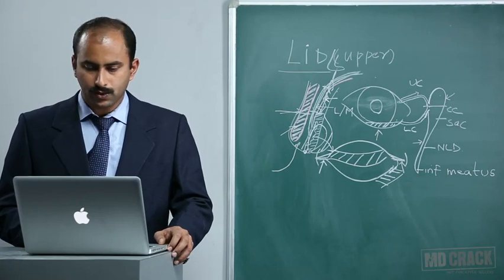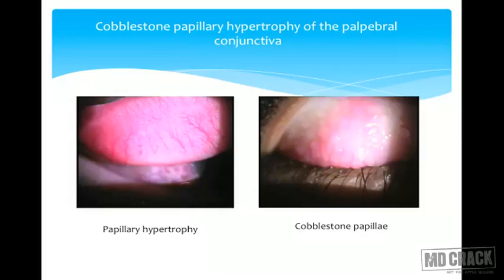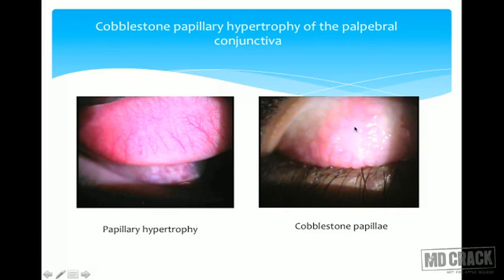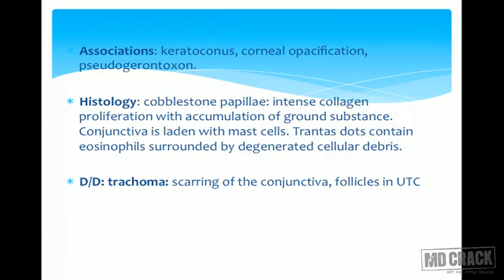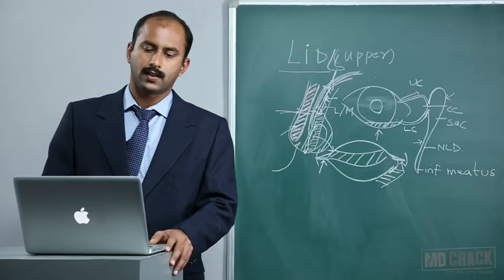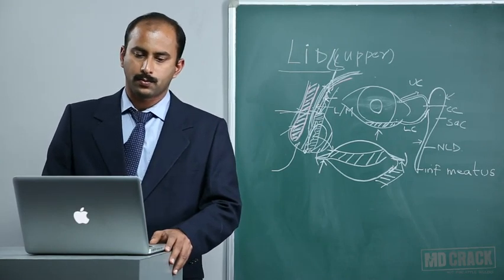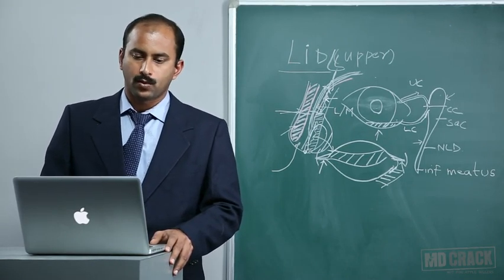Shield ulcers form as part of a single spectrum: excessive mucus production and inflammatory chemicals lead to corneal erosions which coalesce. As seen in the figure, cobblestone hypertrophy of vernal conjunctivitis shows large papillae appearing like cobblestones, a very classical feature seen only in this condition. Associations include keratoconus, corneal opacification, and pseudogerontoxon — an arc-like opacification of the superior cornea due to the particular location of inflammation.